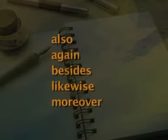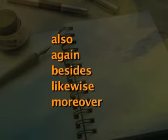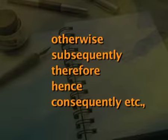Let us now look at some words called linking words, which are also called interlockers, hooks or transitionals. Some of the words very often used in jumbled paragraphs are: also, again, besides, likewise, moreover, otherwise, subsequently, therefore, hence and consequently. I have taken ten examples for you to understand their meanings and usage. Now let us go through each word and its usage.